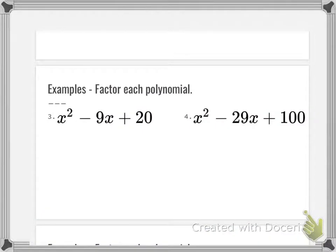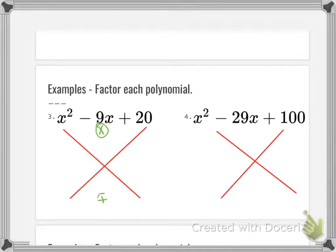Okay, magic X. I'm going to go ahead and draw them in for both of ours. Multiplies, adds, multiplies, adds. So remember, mult adds. So what multiplies to give me 20, adds to give me negative 9.